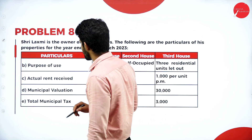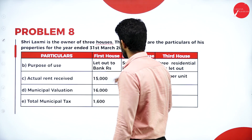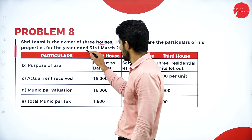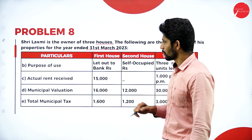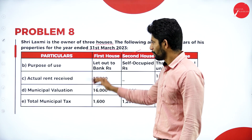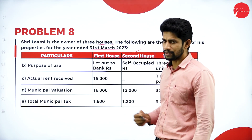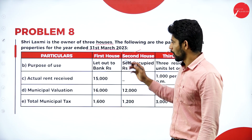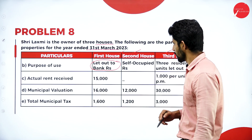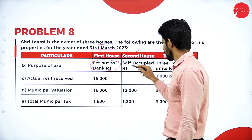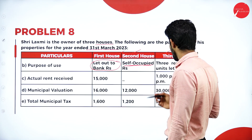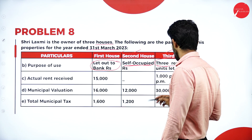Problem number 8: Sri Lakshmi is the owner of three houses. The following are the particulars of properties for the year ended 31st March 2023. House one is let out to a bank — it is let out for rent. House two is self-occupied — occupied by Sri Lakshmi herself. House three has three residential units, all let out. Actual rent is 15,000 for house one; nil for house two as it is self-occupied; and 1,000 per unit for house three, receiving 3,000 per month from three units.